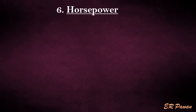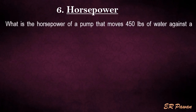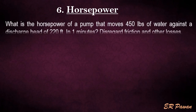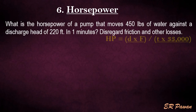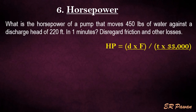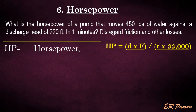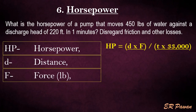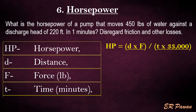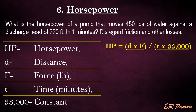Formula 6 — Horsepower. What is the horsepower of a pump that moves 450 pounds of water against a discharge head of 220 feet in one minute? Disregard friction and other losses. Horsepower equals distance multiplied by force divided by time multiplied by 33,000. Where HP = horsepower, distance in feet, F = force in pounds, time in minutes, and 33,000 is a constant. Let's put the value in the formula.